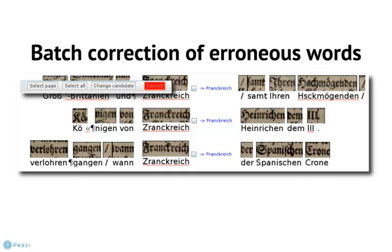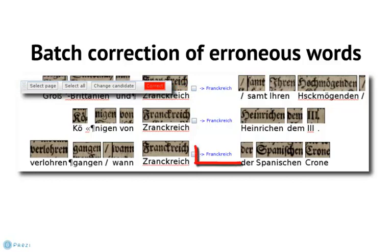Once you've made sure that the profiler's result is correct, all you have to do is select all and correct, and that way all occurrences of Frankreich are corrected throughout the whole text with just two mouse clicks. You can also see in this example that the correction candidate Frankreich is spelled with a CK — this is a historical spelling variation; in modern German you would spell it with a K only — and that was correctly recognized by the SIS tool.